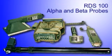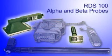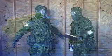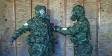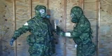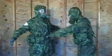If available, use the RDS-100 with alpha and beta probes to locate contamination and to check the effectiveness of decontamination. Both alpha and beta emitters can be present in surface contamination.